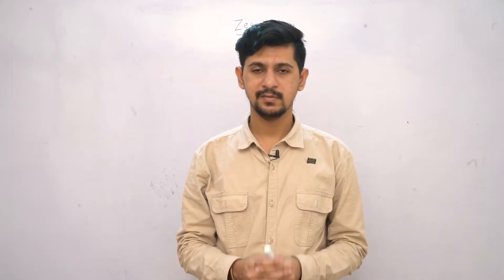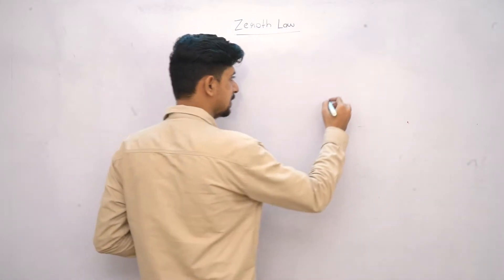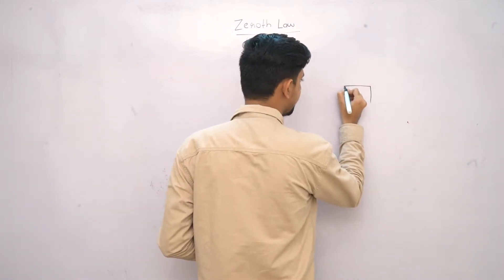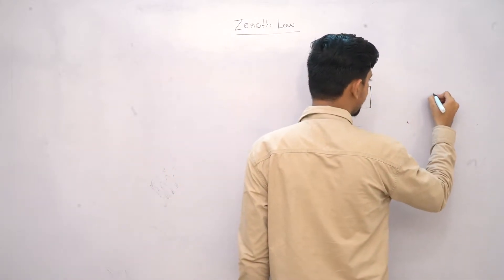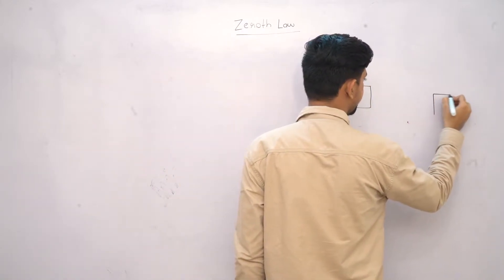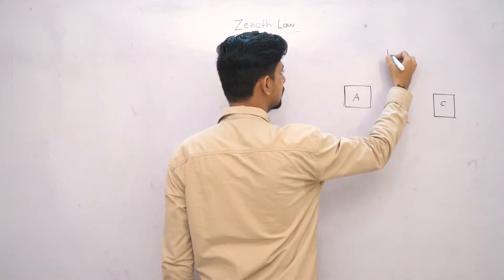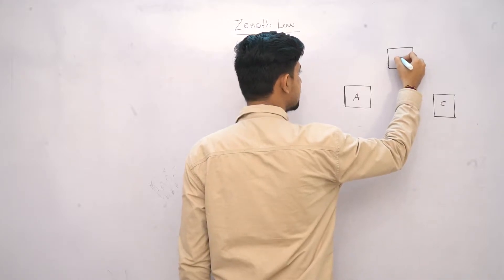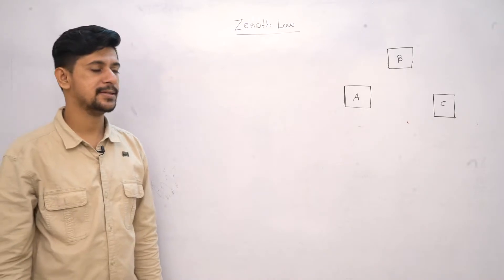The same concept of thermal equilibrium is used in the Zeroth Law. Let's take an example. We have a body named A, another body named C, and a third reference body named B. So we have three bodies: A, B, and C.